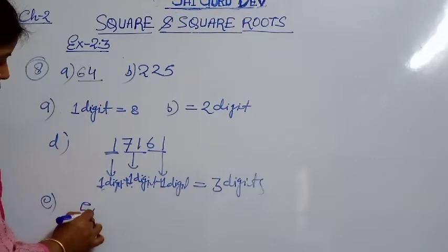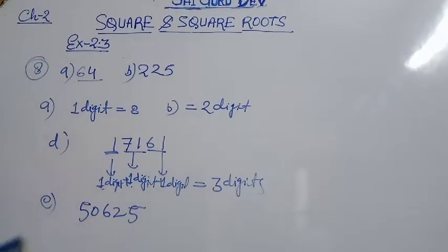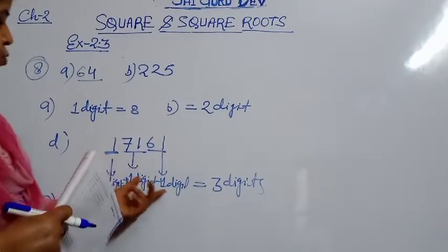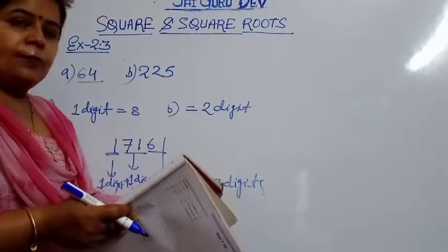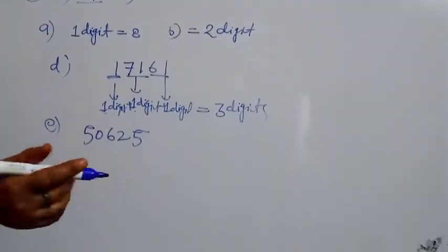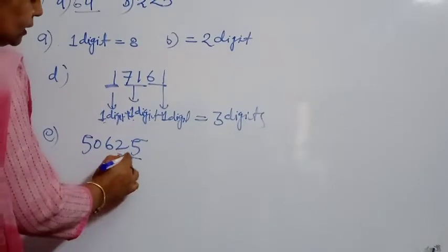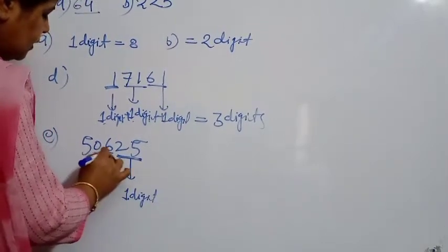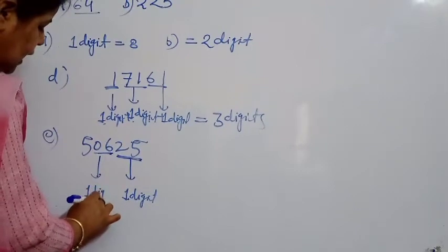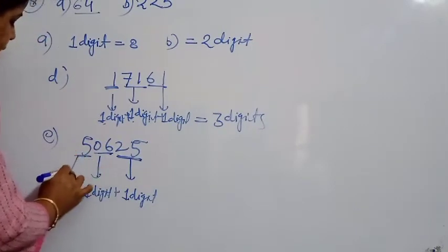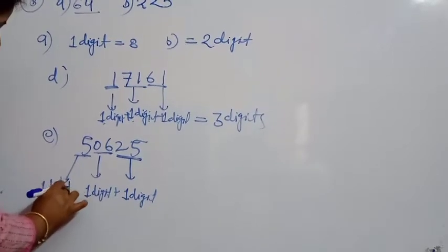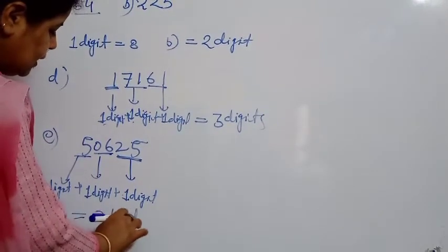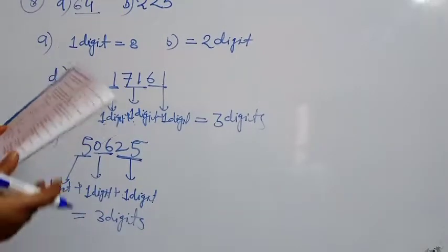For part E: 50625. Start making pairs from the right. One digit for the first pair, one digit for the second pair, one digit for the third pair, and one digit for the remaining part — making three digits total in the square root. One part is left for you to complete yourself.